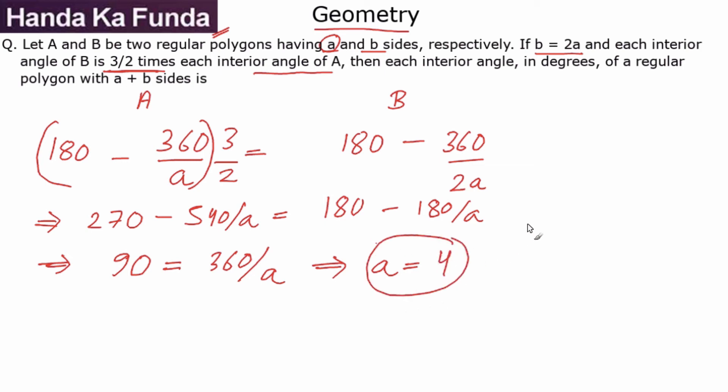Now, once I got the value of A as 4, I also know that B is twice of that. So, B is actually equal to 8 and now we need to find out the interior angle in degrees of a regular polygon with A plus B sides.